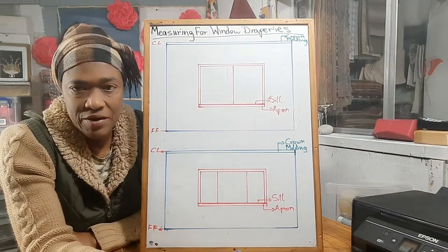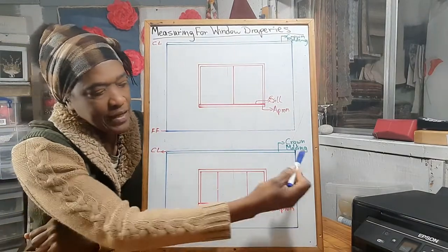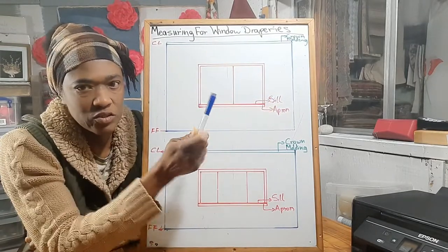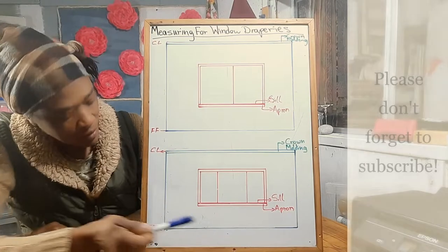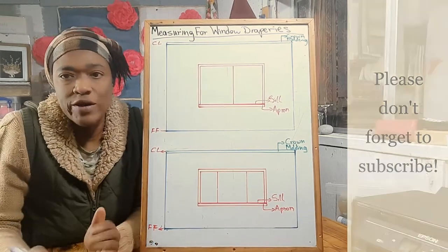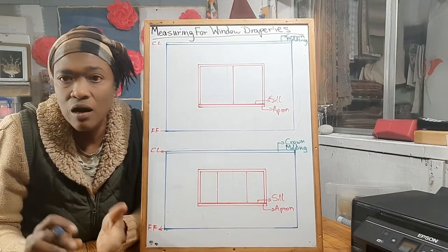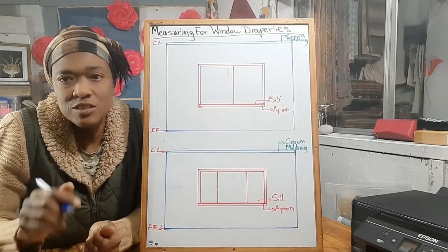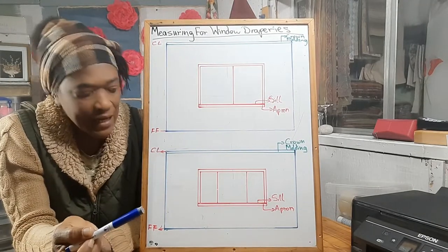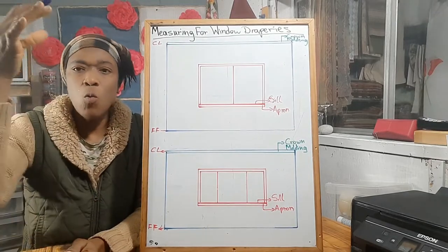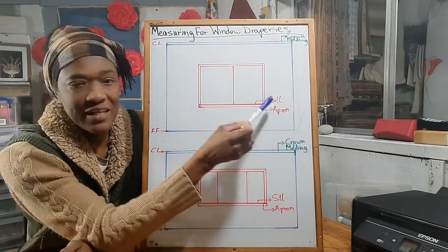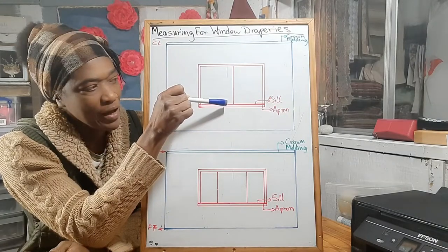On the diagrams, the blue lines represent your walls, and the red lines with the box on the inside represent your window. FF means finish floor — finish floor is whatever your floor is finished with, so if it's carpet, hardwood, concrete, tiles, whatever it is, that's your finished floor. CL represents ceiling line, which is where your wall meets your ceiling.